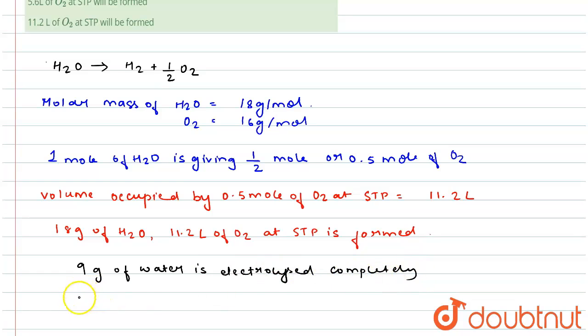So since from 18 gram of H2O, 11.2 liter of O2 at STP is formed...